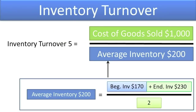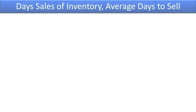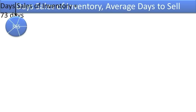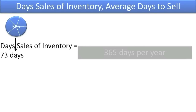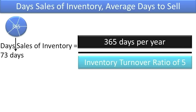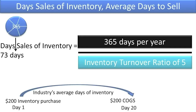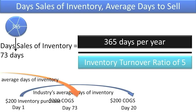But what does a ratio of 5 really mean? Unless you compare it to the past, compare it to competitors, or use it to compute the number of days it takes the company to sell its inventory, the inventory turnover ratio is a fairly useless number on its own. If we take 365 days and divide it into 5 equal periods, we find the company takes 73 days to sell its inventory — 365 divided by 5. Now if the industry normally takes only 20 days to sell its inventory, it would seem that Company A's management is not very effective or efficient.